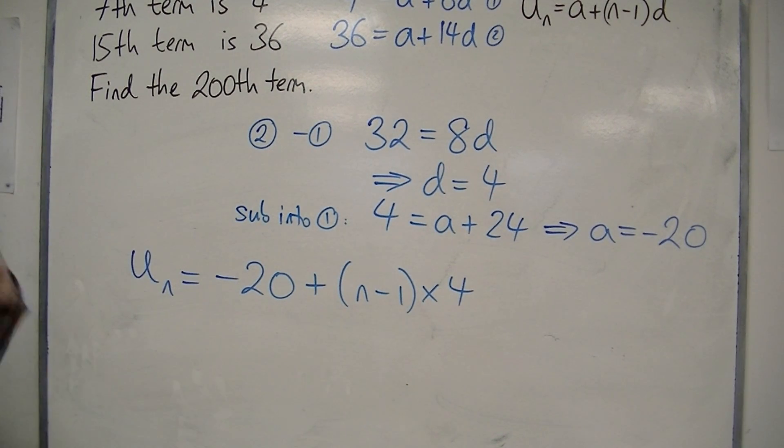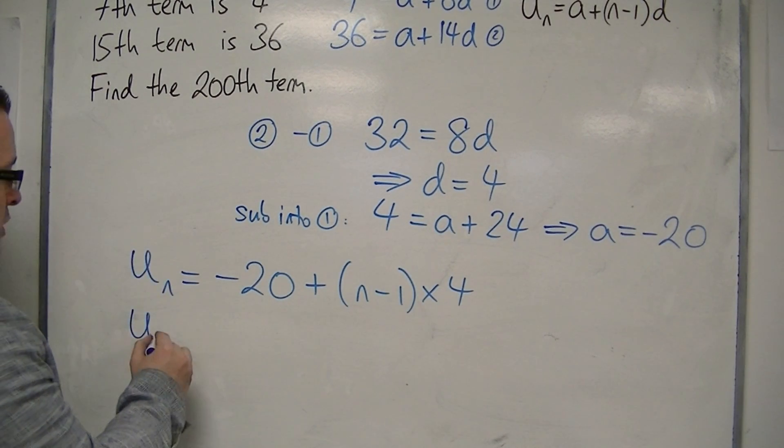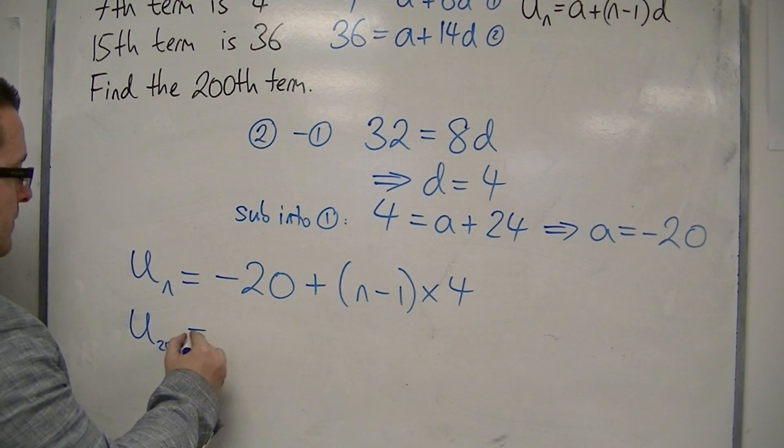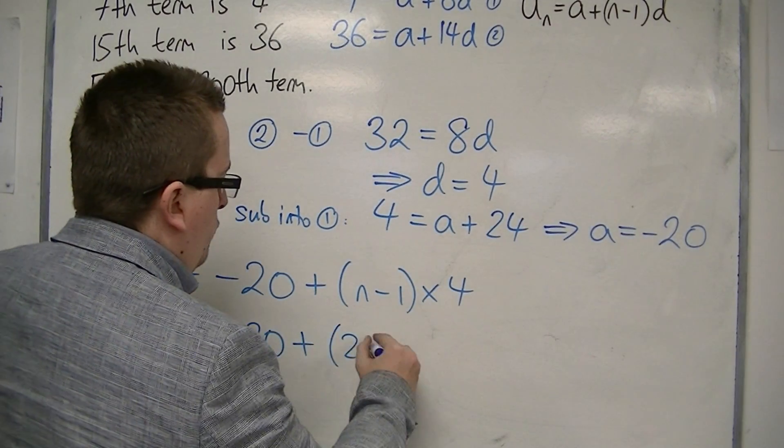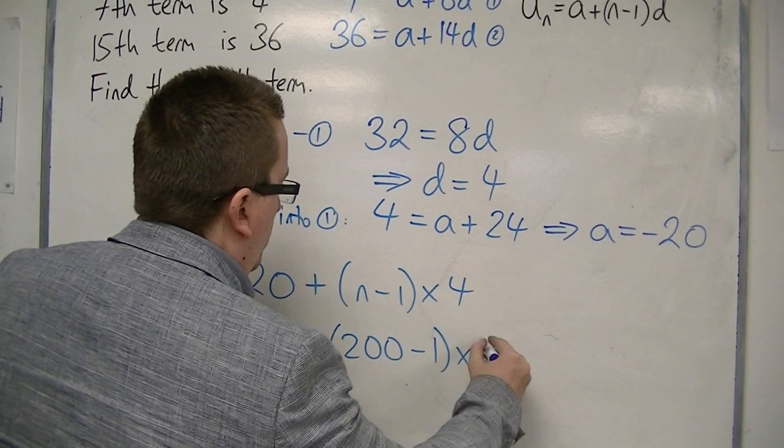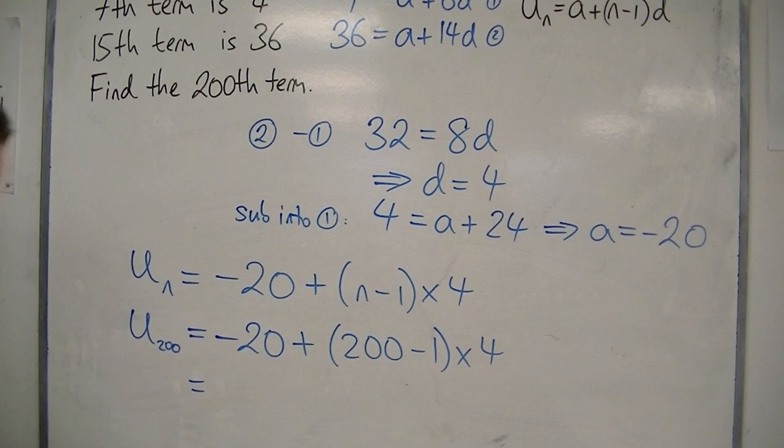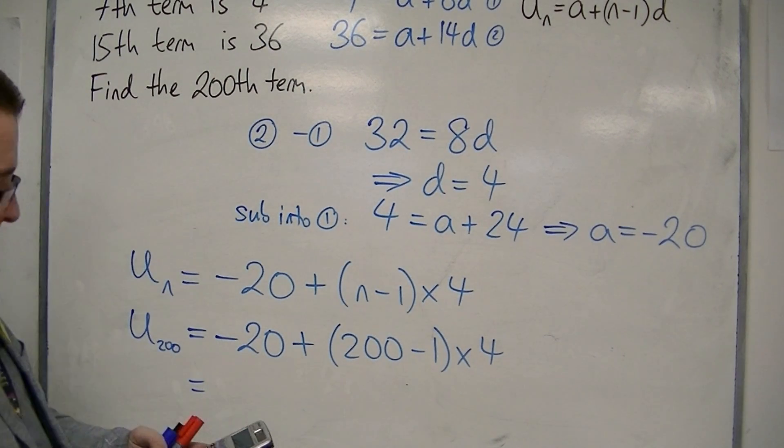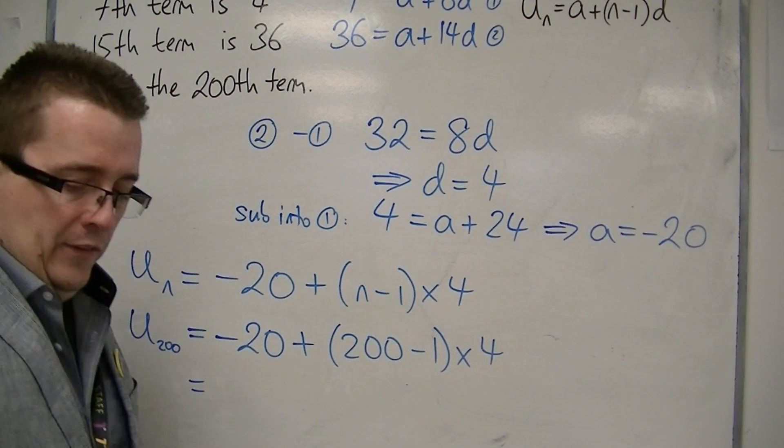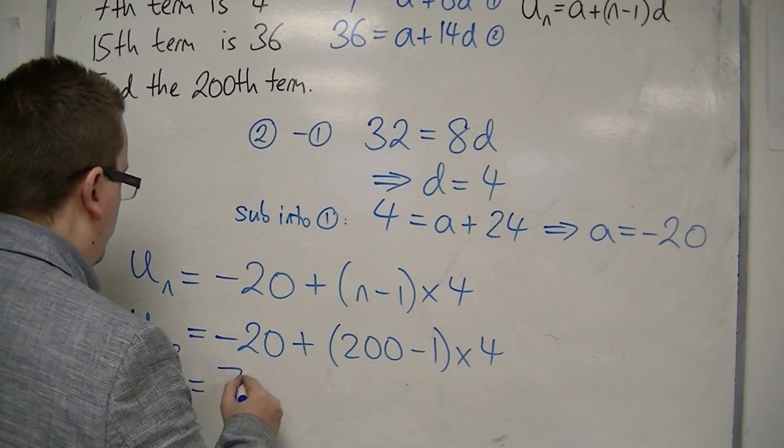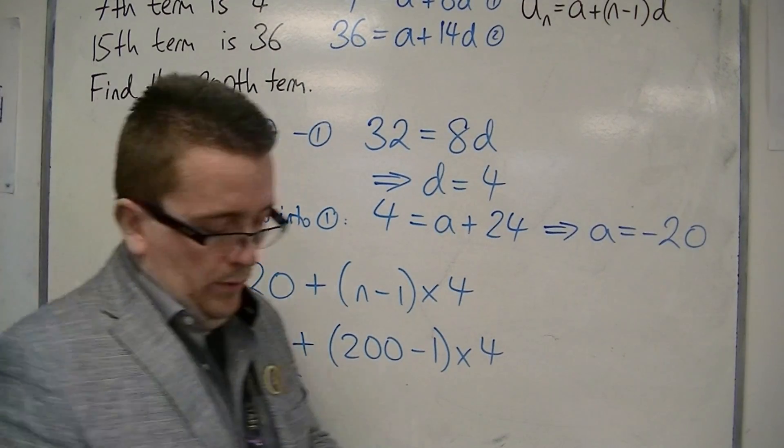Now what I want is the 200th term. So U200 is minus 20 plus 200 minus 1 times 4. So if I put that into the calculator, minus 20 plus 199 times 4 is 776. And that is the 200th term of the sequence.